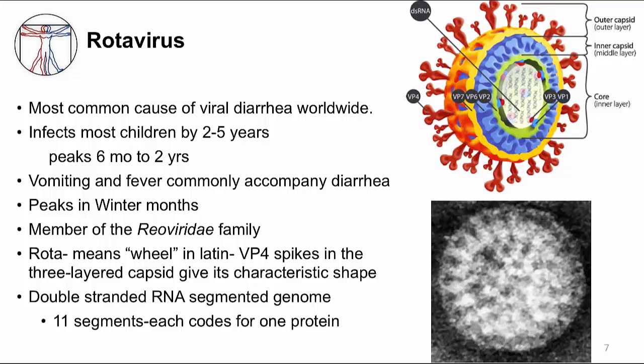Rotavirus is a member of the Reoviridae family and is the only human pathogen in this family. The name rotavirus comes from rota — think rotate — which means wheel in Latin. You can see in the electron microscopy image that the virus looks like it has spokes in a wheel. This is due to the VP4 protein, which makes spikes on the outer capsid. Rotavirus is very well encapsulated; it has three protein layers in its capsid. However, it does not have a membrane envelope around it. The genome is quite unique: double-stranded RNA that is segmented. Each of the 11 segmented pieces codes for a different protein.